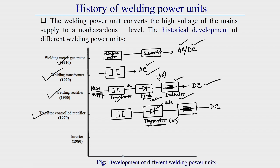The thyristor-controlled rectifier provides comparatively better DC output than the welding rectifier and is a more advanced power source. The fifth type of power source is the inverter, invented in 1980. Welding transformers, rectifiers, and thyristor units tend to be heavy and not portable, but the inverter has tremendously reduced size and weight.